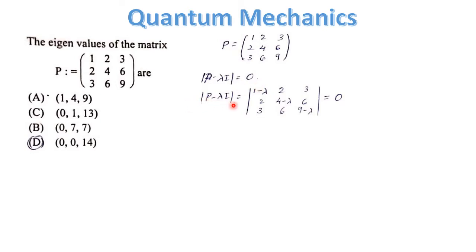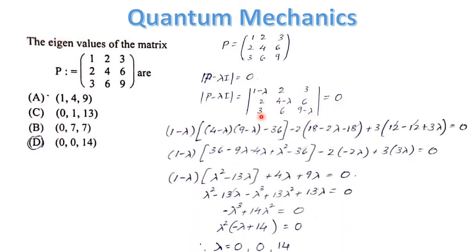Then P minus λI will be equal to the matrix with entries (1−λ), 2, 3 in the first row; 2, (4−λ), 6 in the second row; and 3, 6, (9−λ) in the third row, set equal to 0.